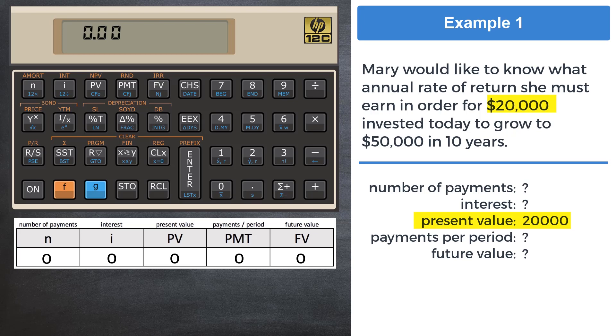20,000 is the present value. 50,000 is the future value. Years are the unit of time in this question, so we can interpret the number of periods to be 10 from 10 years.